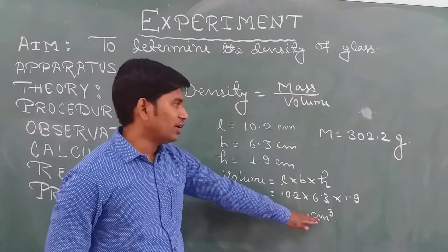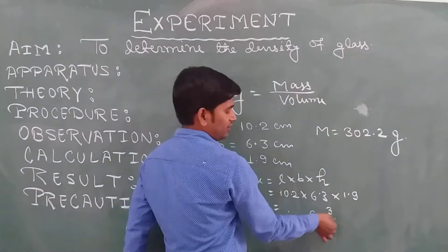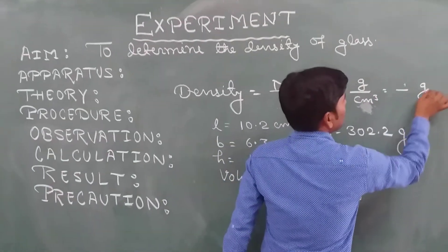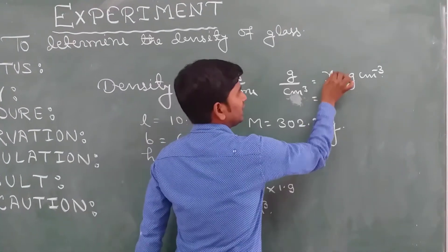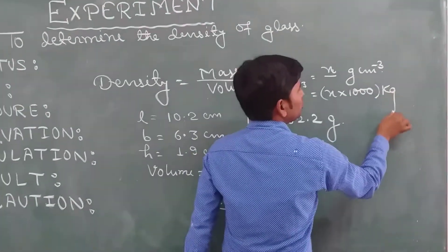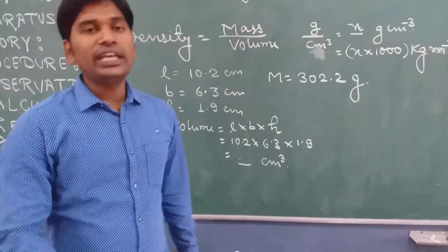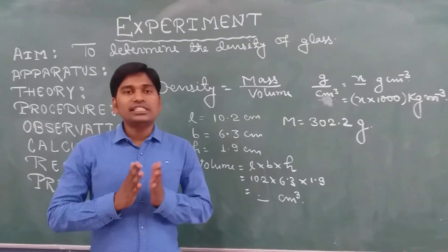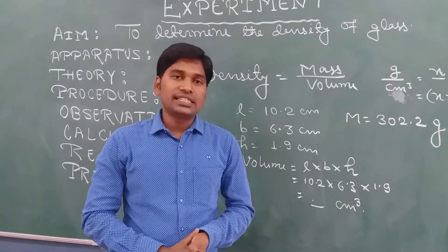After getting volume and mass we can determine the density. The mass is measured in grams and volume in centimeter cube, so density will be in grams per centimeter cube. If we are getting a value x, we multiply it by 1000 to convert it to the SI unit, which is kilograms per meter cube. In this way we can determine the density of a glass slab. Thank you students, thank you for watching.